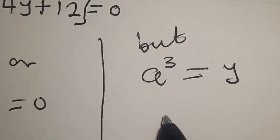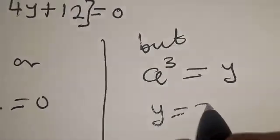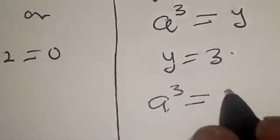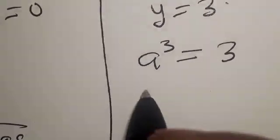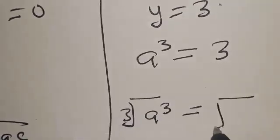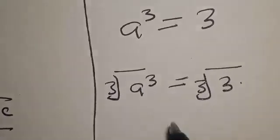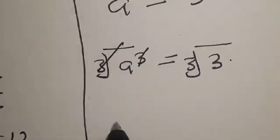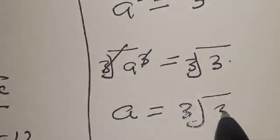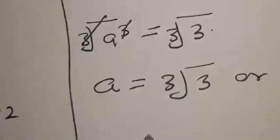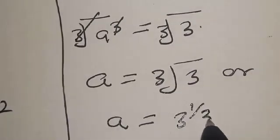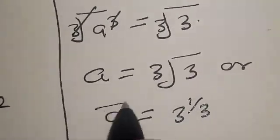Since A raised to power 3 is equal to Y and Y is equal to 3, we have A raised to power 3 is equal to 3. Taking the cube root of both sides, A is equal to the cube root of 3, or equivalently A is equal to 3 raised to the power of one over 3. That is our final answer.